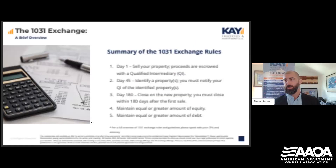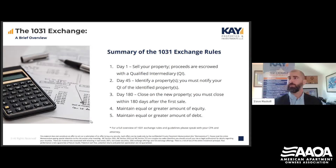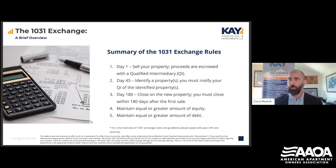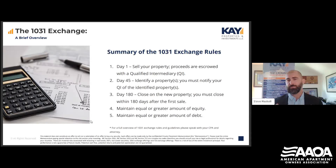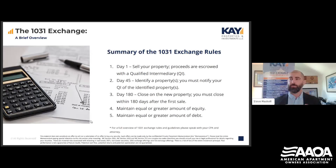But if you conduct a 1031, you can defer taxes and help preserve a tremendous amount of capital. In order to do so, you must use a qualified intermediary — don't touch the money. When you sell a property, make sure it doesn't go into your bank account; it has to go into a bank account of a qualified intermediary. In 45 days from the time you close, you tell the intermediary which properties you want to buy. You then have 180 days to close on your replacement property, and those two timeframes run concurrently.